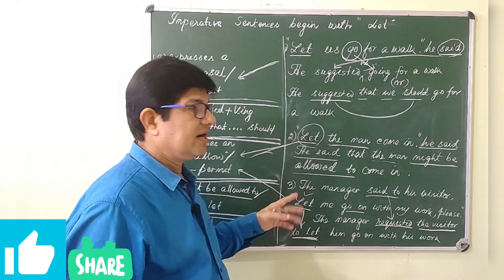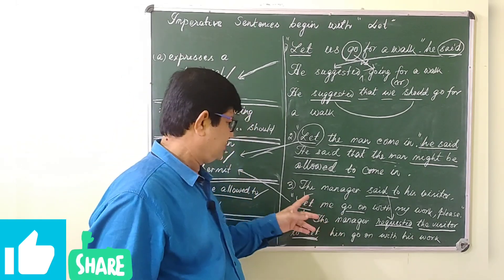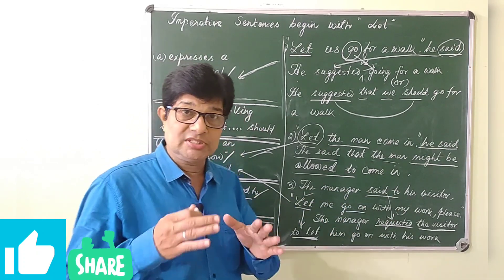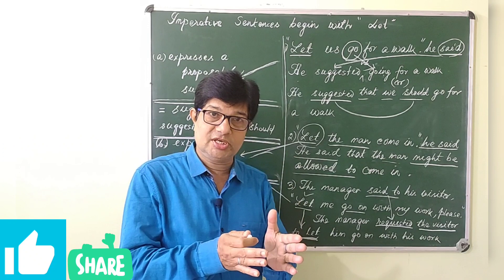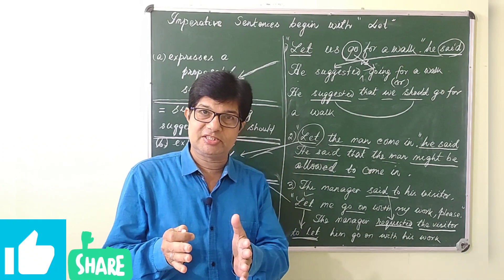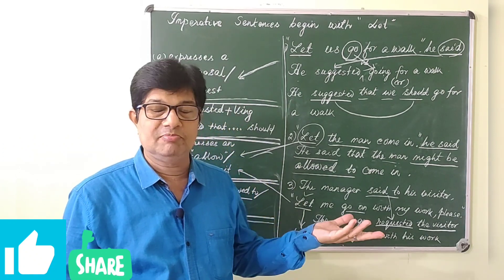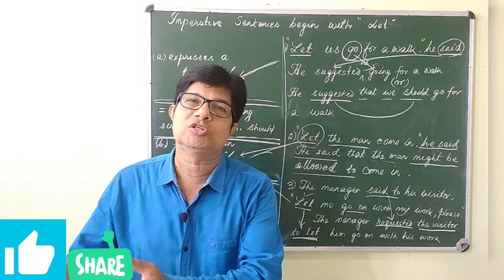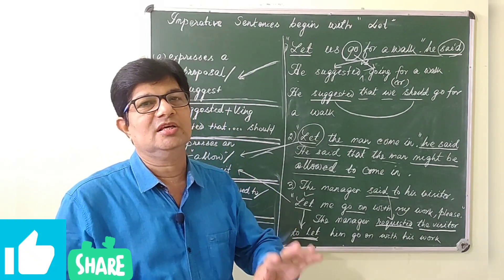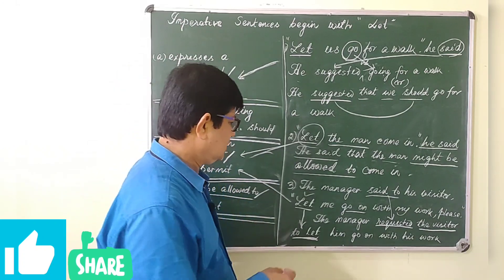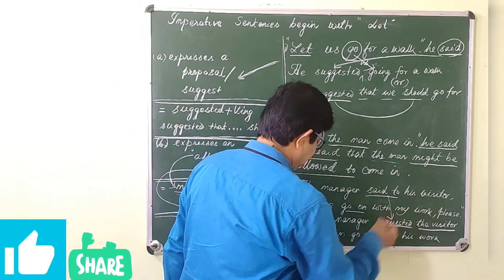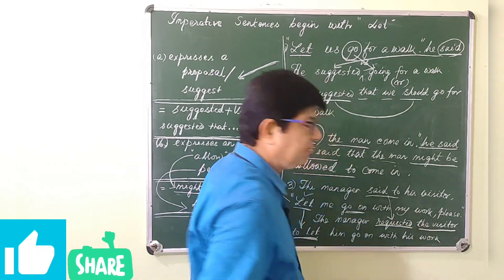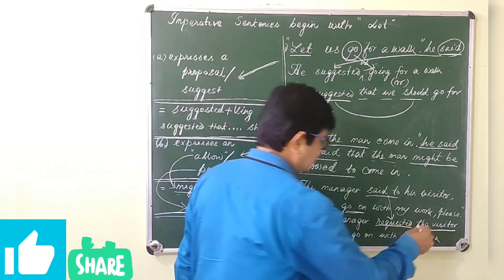The third and last example of imperative sentences. The manager said to his visitor - you must follow the formula: pronoun change, tense aspect change. But in imperative sentences, tense aspect is only changed in a clause, not in the main. The manager said to his visitor, let me go on with my work, please. Here is a request.